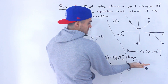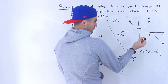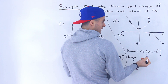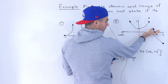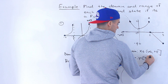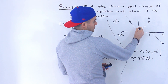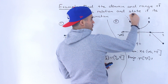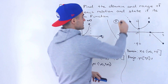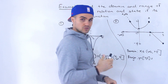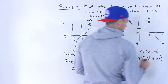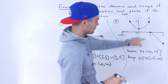For the range, we look at y values from negative infinity to positive infinity. The absolute minimum of this relation is at y equals negative four, so y values go from negative four up to zero along the parabola. So y is an element from negative four to zero. Then the line portion contributes y values from one to positive infinity, because the arrow makes it continue upward without bound.